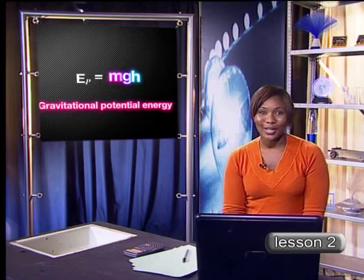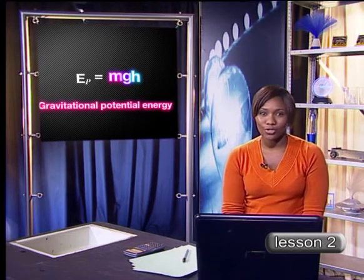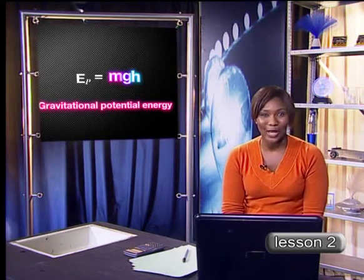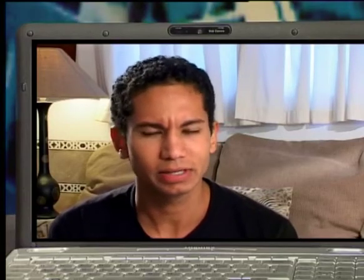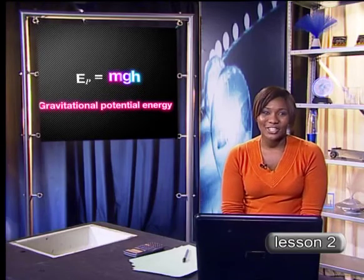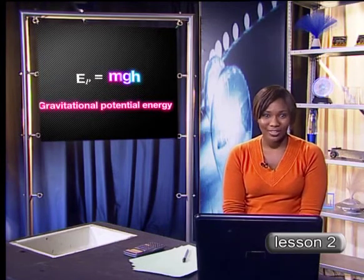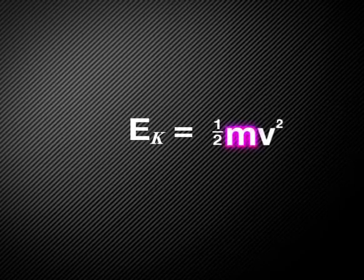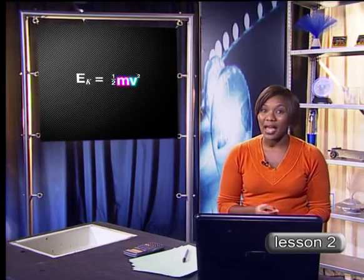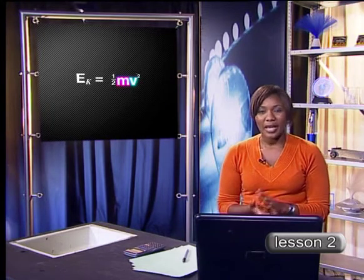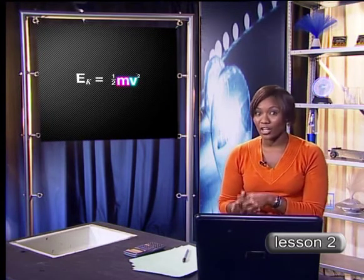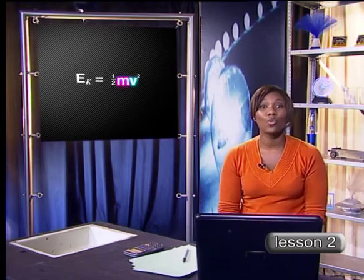Potential energy is calculated by mass times gravitational acceleration times height. This type of potential energy is sometimes referred to as gravitational potential energy. But what about kinetic energy? Kinetic energy is the energy that a body possesses because of its motion. Kinetic energy depends on the mass and velocity of a body — it is the product of the mass and velocity of a moving object. If the velocity of a body is zero, then the kinetic energy will also be zero.